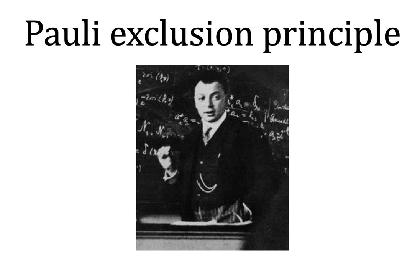Atoms can have different overall spin, which determines whether they are fermions or bosons. For example, helium-3 has spin one-half and is therefore a fermion, in contrast to helium-4 which has spin zero and is a boson. As such, the Pauli exclusion principle underpins many properties of everyday matter, from its large-scale stability to the chemical behavior of atoms.